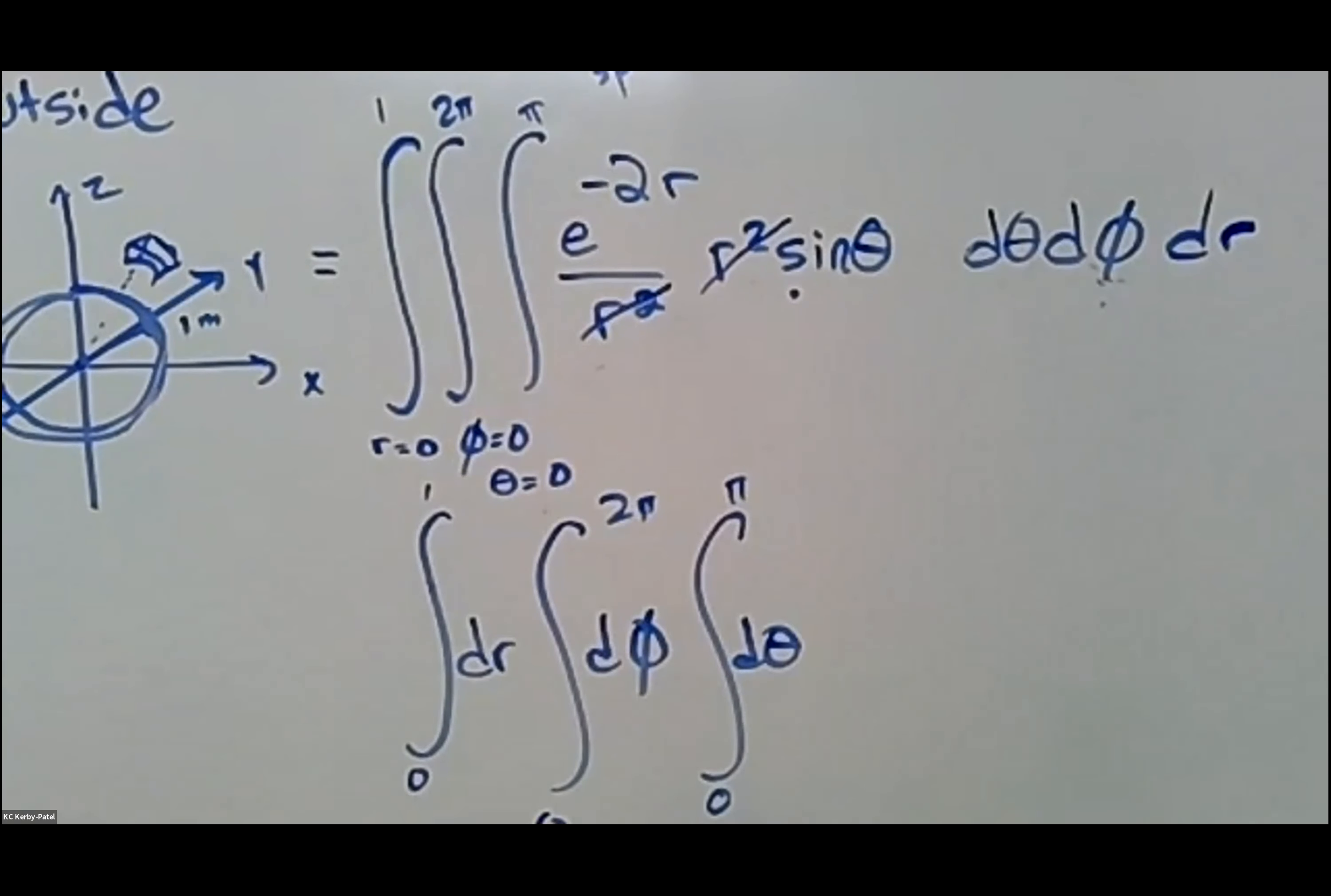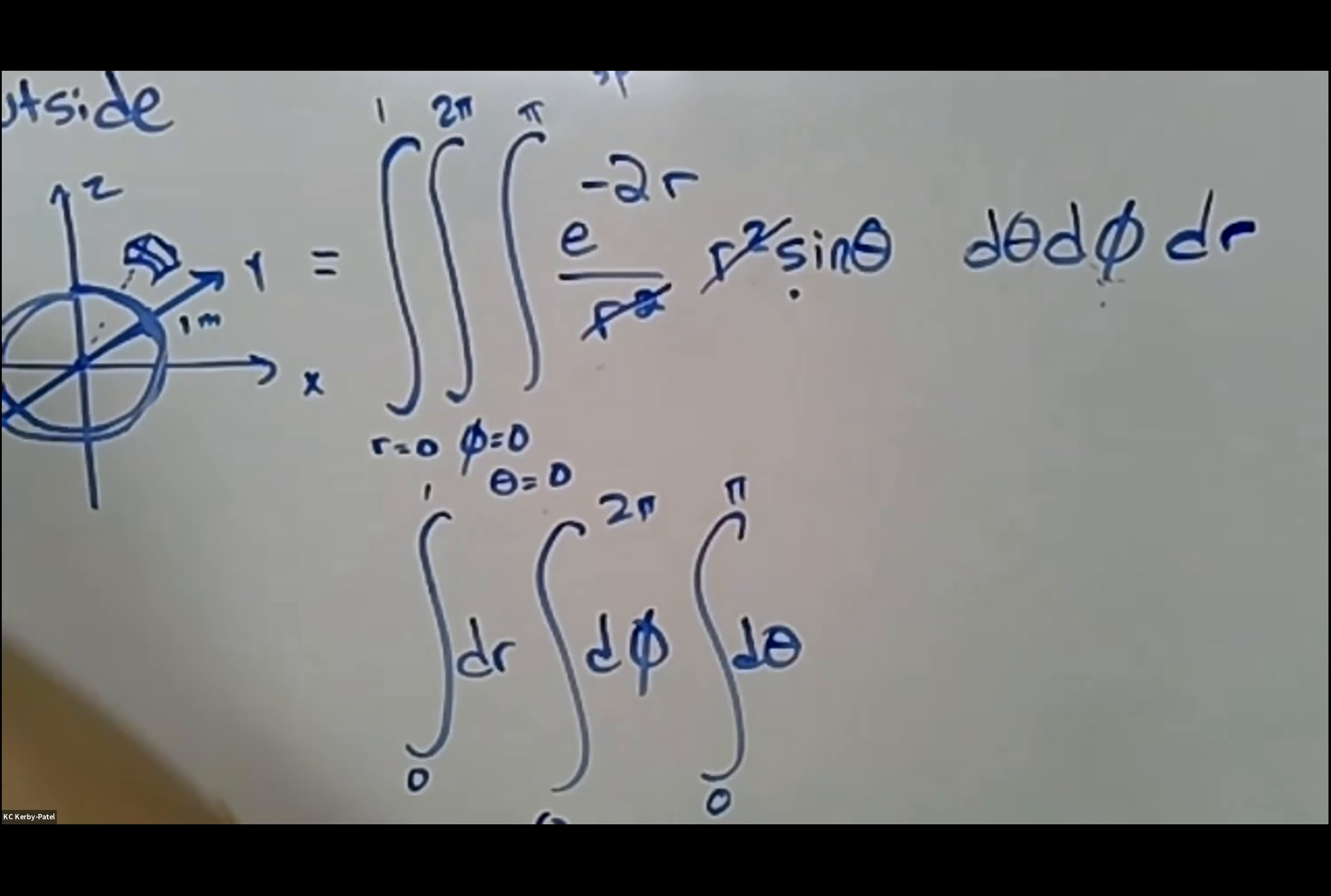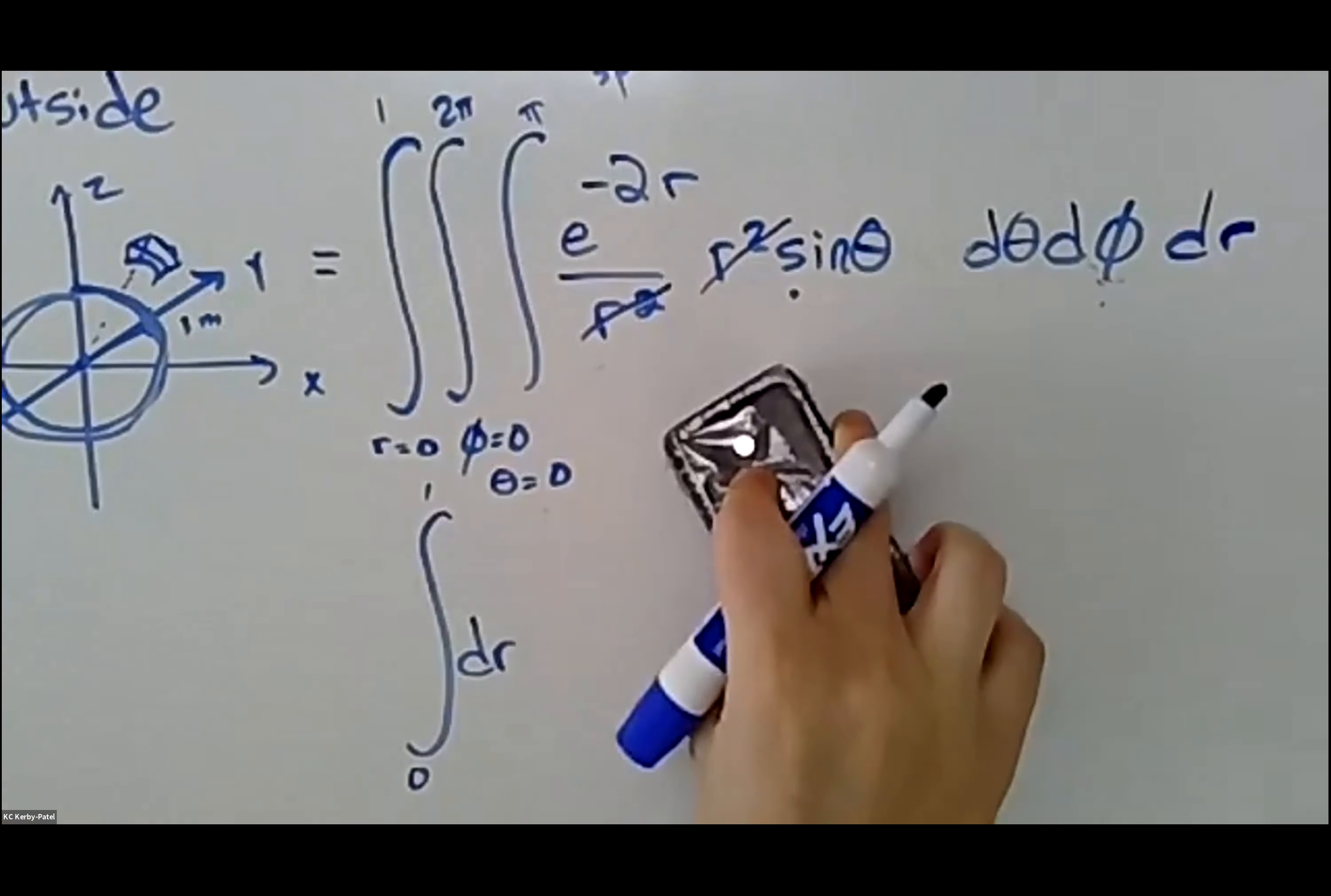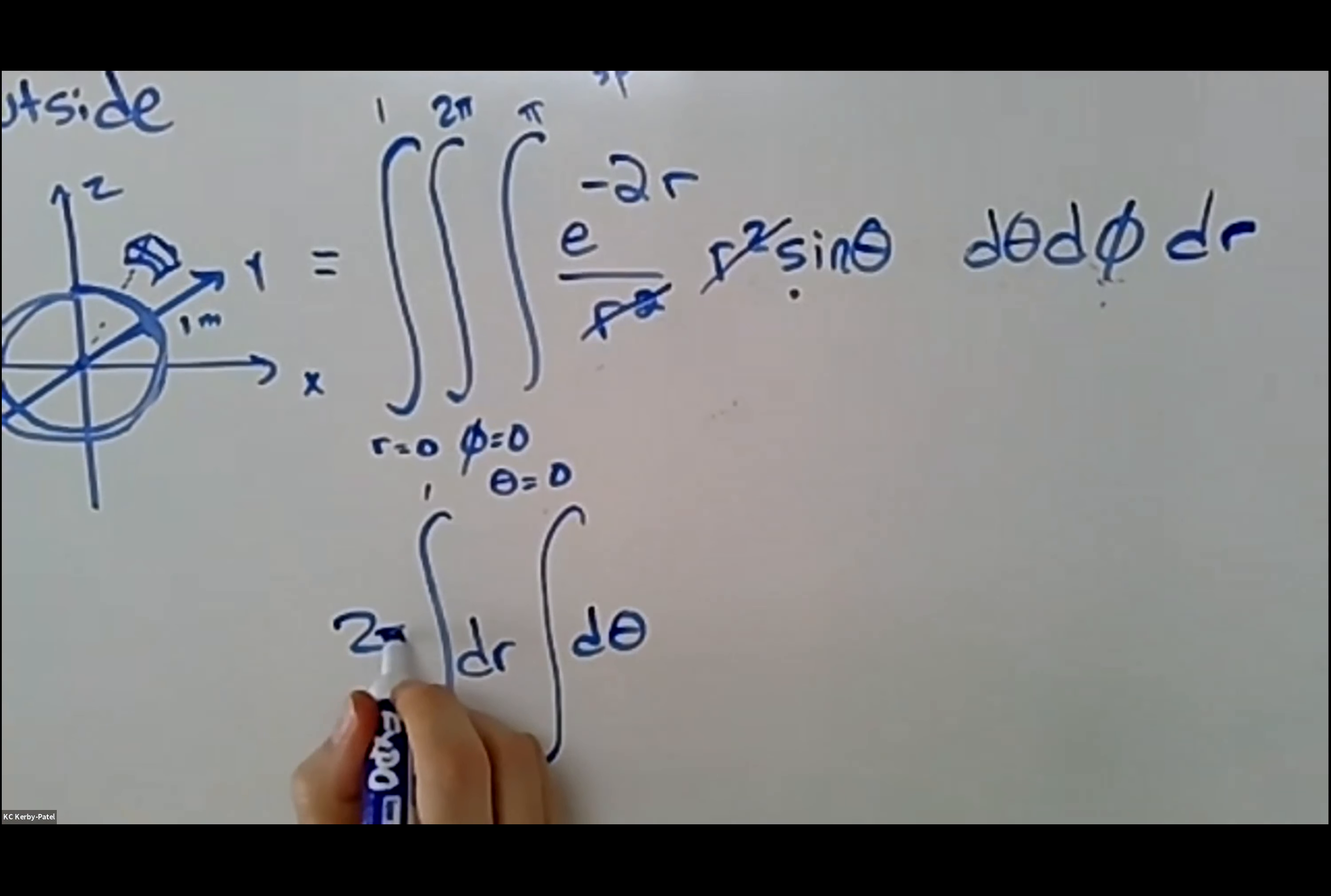Cool. Nothing in here depends on phi, so I actually don't have to do anything except for evaluate this integral zero to 2π of dφ, which gives me a factor of 2π. So I'm going to get rid of that to save space and put that 2π in the front.